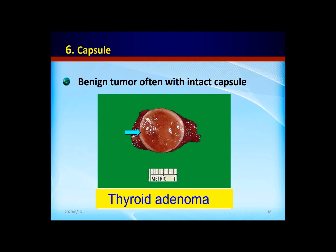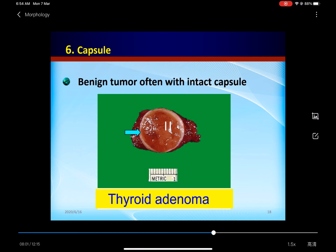The last gross feature is capsules. Benign tumors often have intact capsules. This is a thyroid adenoma — we can find a very thin, intact capsule, so the growth appearance is very well-demarcated. But malignant tumors are without capsules, showing invasive or infiltrative growth patterns, so we cannot find clear boundaries.